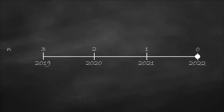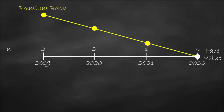At maturity, the bond price will be equal to face value. For a premium bond, the bond price is greater than face value, so I will draw it higher than face value. Therefore, for a premium bond over time, it must reach face value at maturity — meaning the bond price will keep decreasing until we reach face value at maturity.